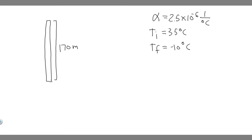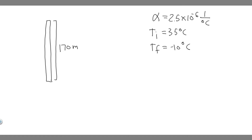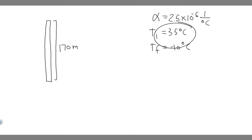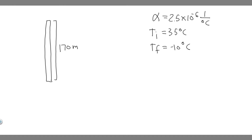What you want to imagine here is that this monument is like a beam. What they tell us is its height — 170 meters — and you can think about this as just a length. So it's going to be 170 meters at 35 degrees Celsius, and what we're trying to do is find the new height when the temperature changes to minus 10 degrees Celsius.